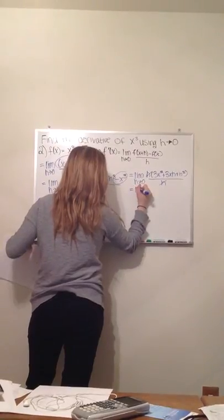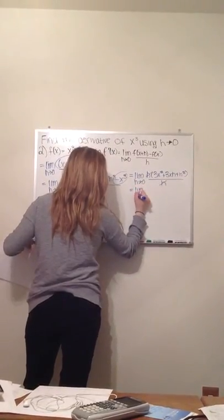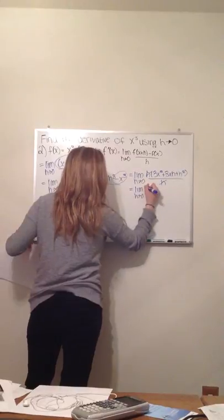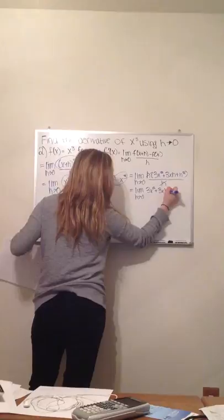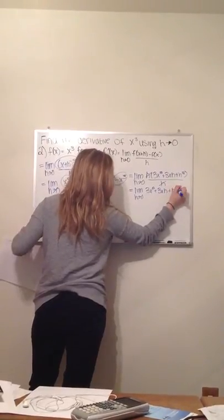So it would leave us with the limit as h approaches 0 of 3x squared plus 3x h plus h squared.